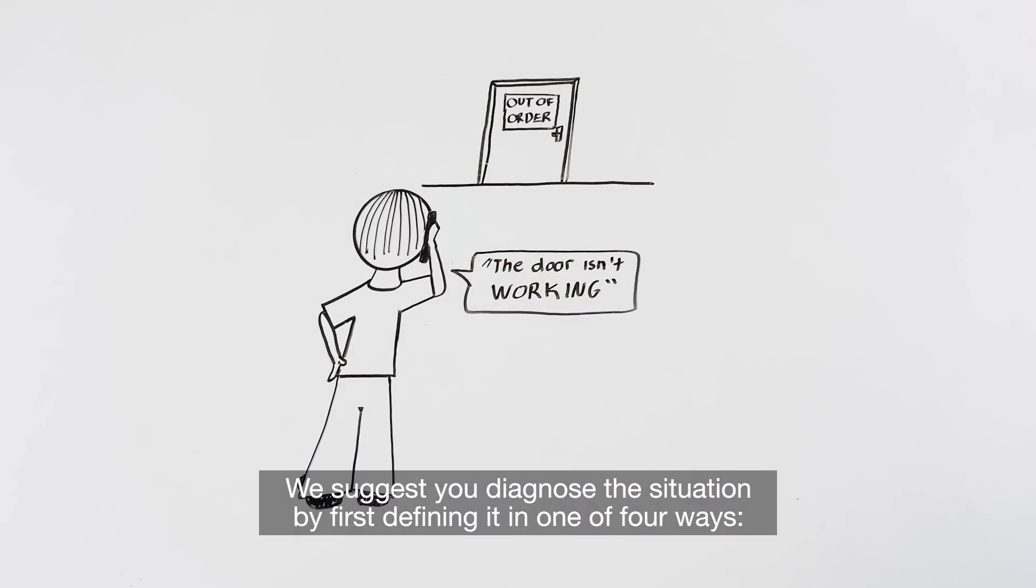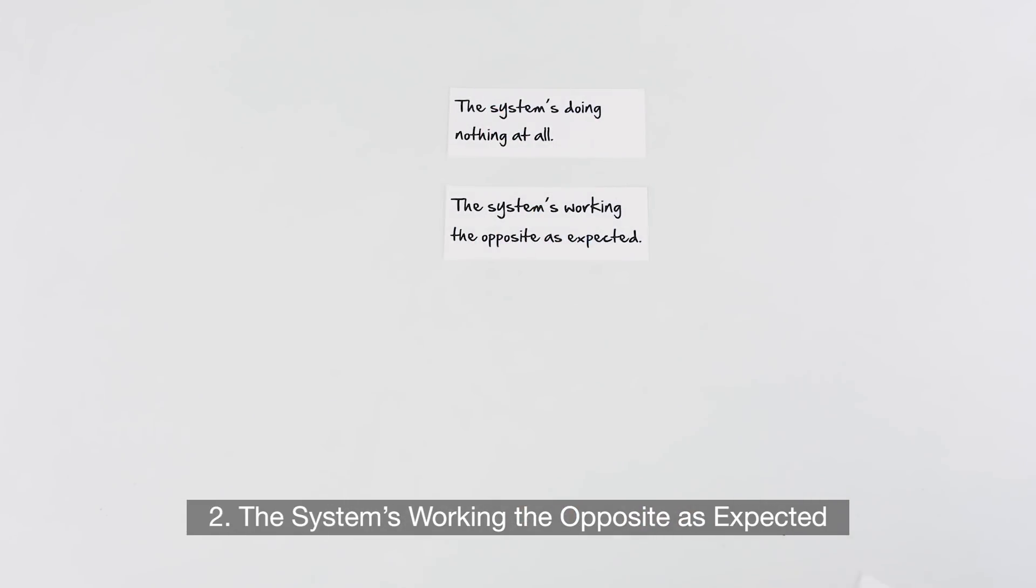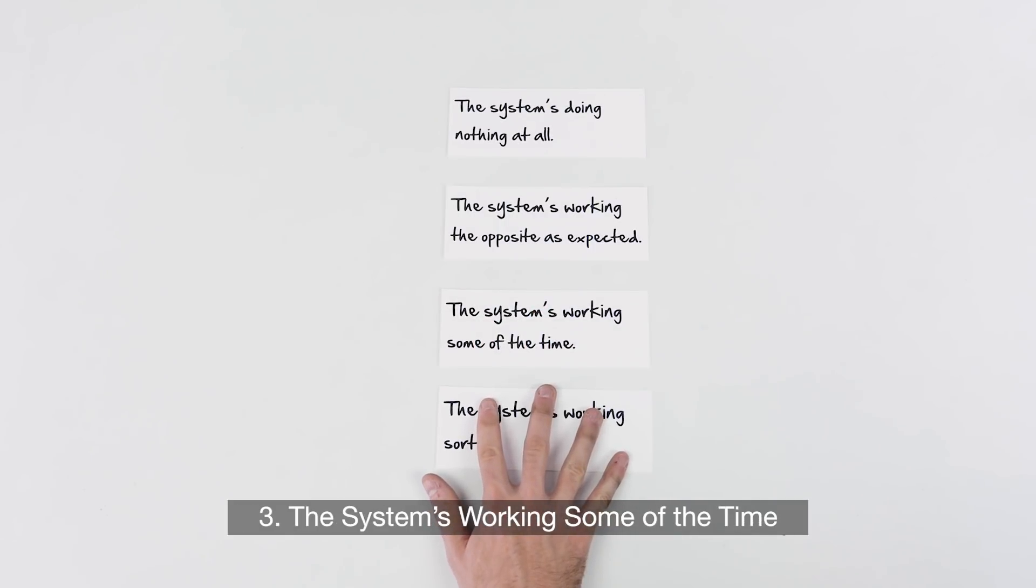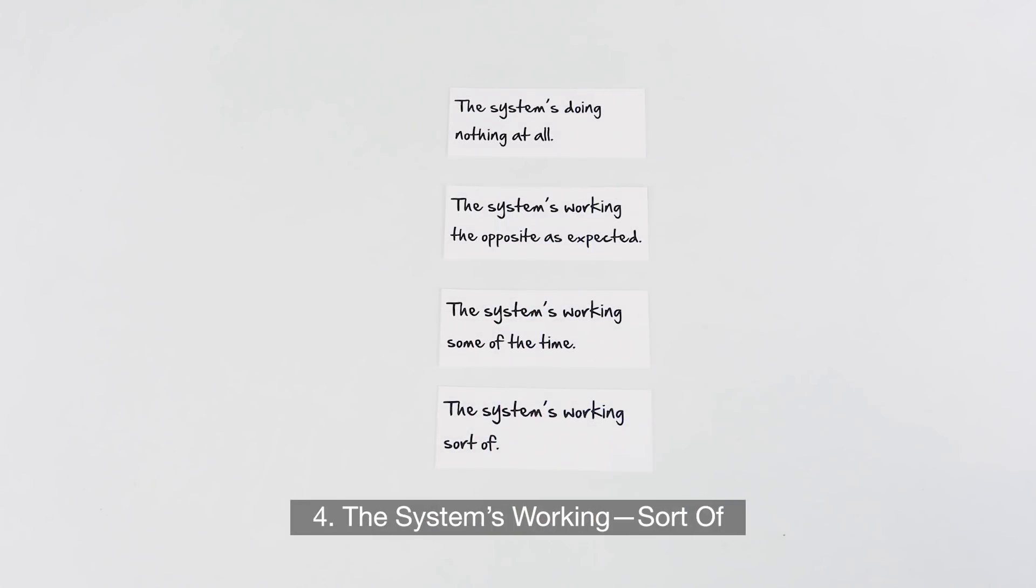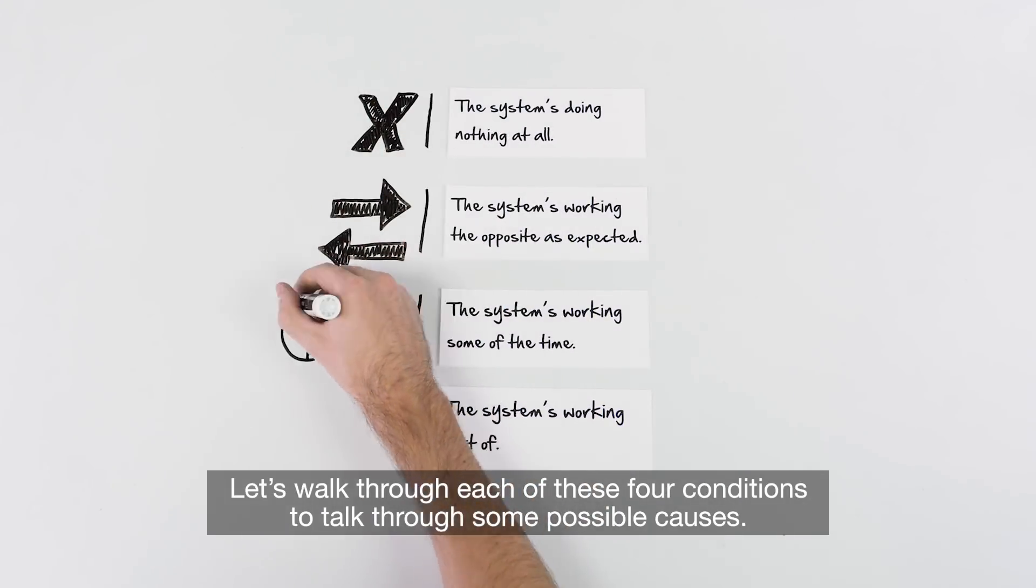We suggest you diagnose the situation by first defining it in one of four ways. The system's doing nothing at all. The system's working the opposite as expected. The system's working some of the time. The system's working sort of. Let's walk through each of these four conditions to talk through some possible causes.